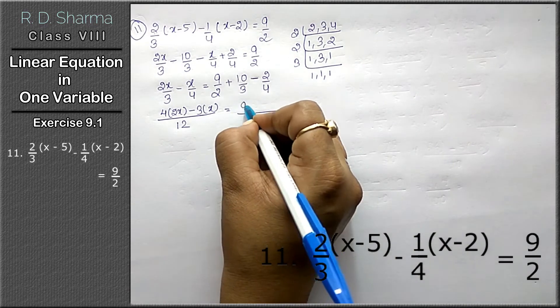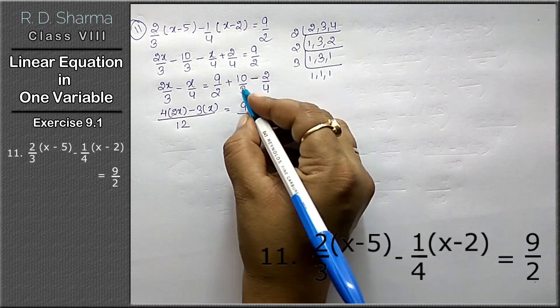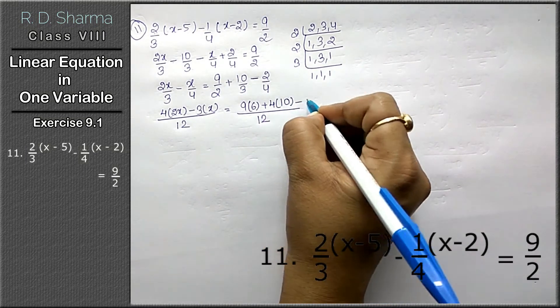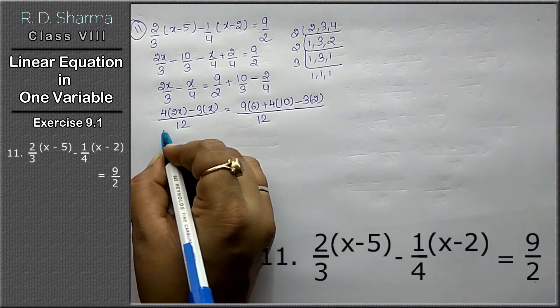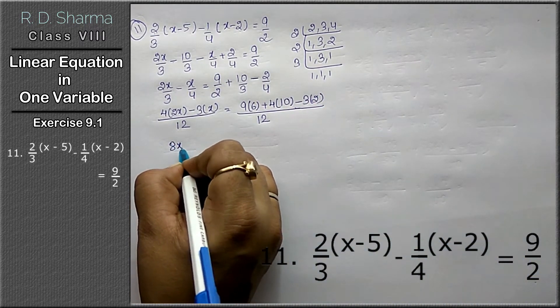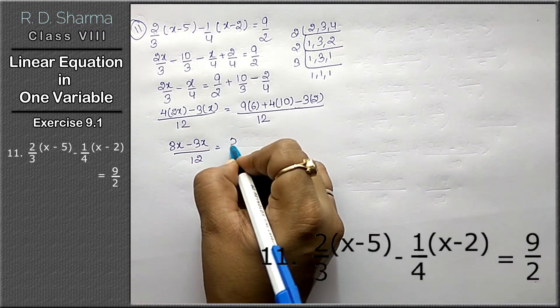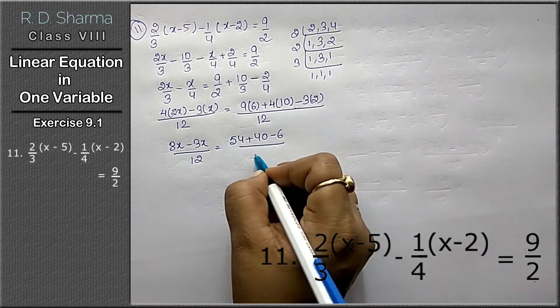Now, 4 times 2 is 8x minus 3x upon 12 equals to 9 times 6 is 54 plus 40 minus 6 upon 12.